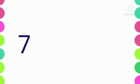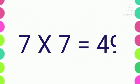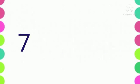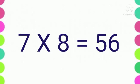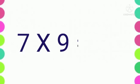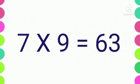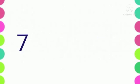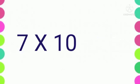Seven sixes are forty-two. Seven sevens are forty-nine. Seven eights are fifty-six. Seven nines are sixty-three. Seven tens are seventy.